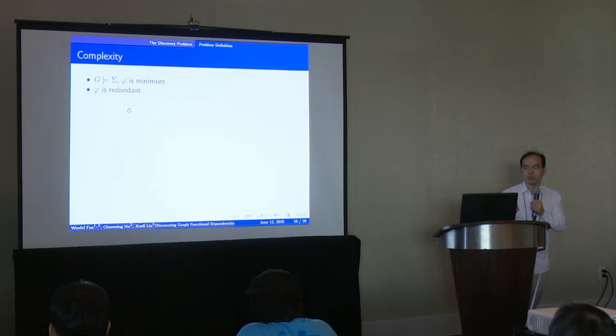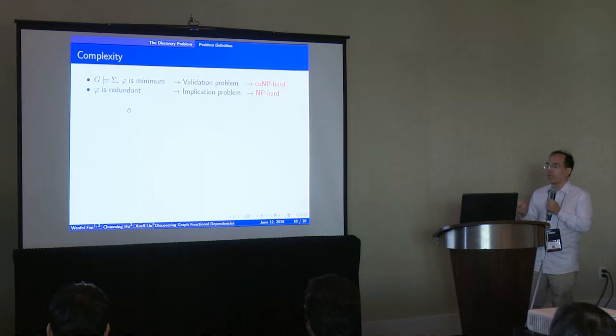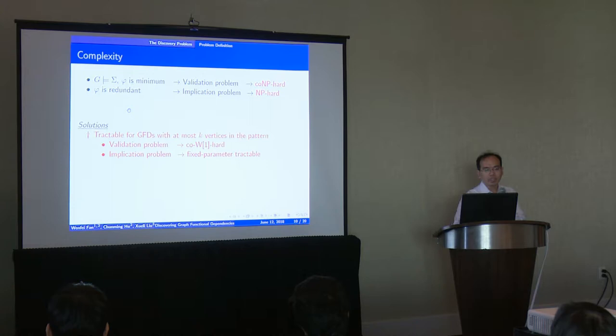Now we consider the complexities of the discovery problem. Underlying the discovery problem are two foundational problems above the GFD, which are the validation problem and the implication problem. These two problems are co-NP-hard and coNP-hard respectively. Then how can we lower the complexity? We found that when we bound the number of edges in the pattern, then the discovery problem will become tractable.